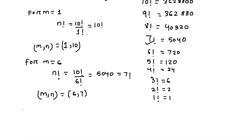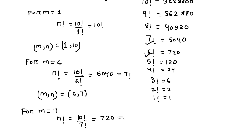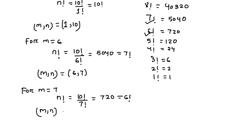For m equals to 7, n factorial equals 10 factorial divided by 7 factorial, which equals 720. You can see that 6 factorial equals 720, so this equals 6 factorial — a perfect factorial value. So m equals to 7 is a valid value, giving us m comma n equals to 7 comma 6.